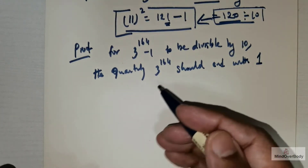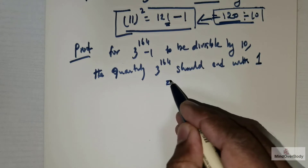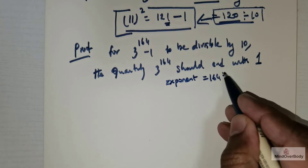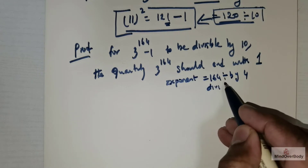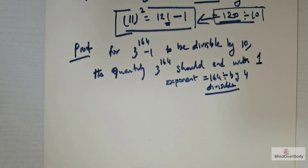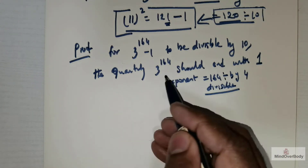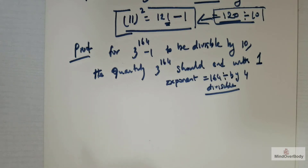So the question is, when would that happen? You can clearly see the exponent has a value of 164, and it is divisible by 4. So what I am trying to do is: I know that this exponent is divisible by 4, and I need to check if any quantity with an exponent divisible by 4 ends with 1. That is the check we need to do.